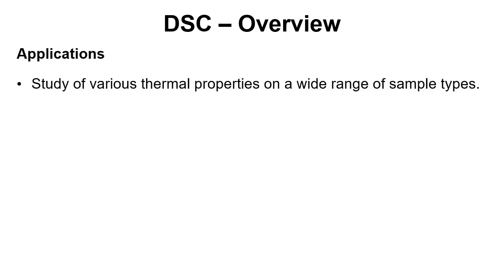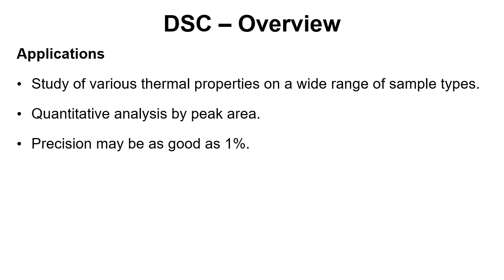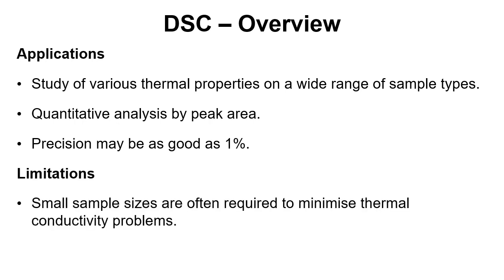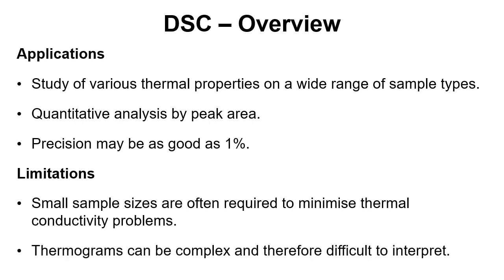In terms of applications, we can study various thermal processes for a wide range of materials, and it allows quantitative analysis because we can look at the peak area, which is proportional to the energy associated with the thermal event. Precision can be as good as one percent. Limitations include the requirement for small sample sizes, just as with DTA, to minimize thermal conductivity problems. We also need good thermal contact between the sample material and the base of the pan to ensure good heat flux and heat flow. Additionally, thermograms can be quite complicated and difficult to interpret.